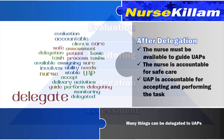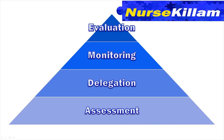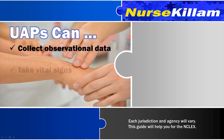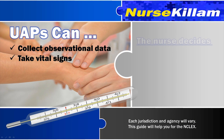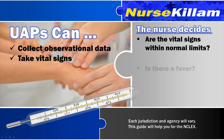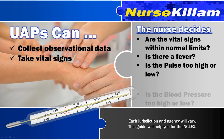The NCSBN website has an excellent video you should watch that talks about the process for delegation, which involves assessment, delegation, monitoring, and evaluation. UAPs can collect observational data for the nurse and take vital signs, but the nurse needs to be the one to interpret the data and decide if the vital signs are abnormal or if an intervention is needed.